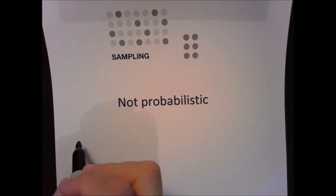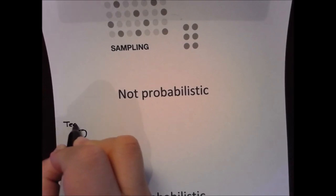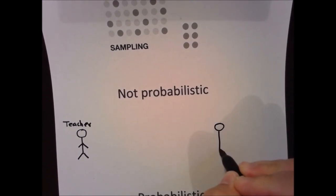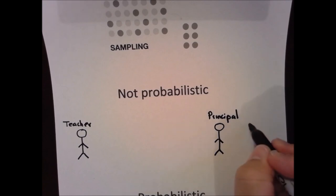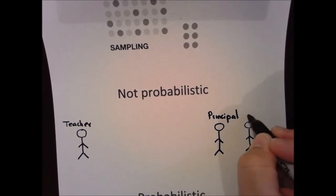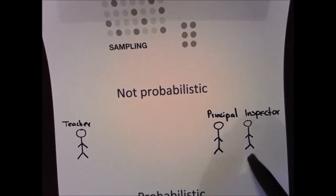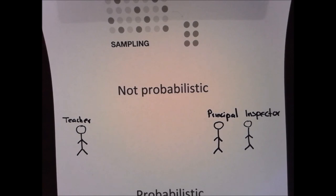Let's suppose that we have a teacher and then we have the principal of the school, and here we have a school inspector. The inspector asked the principal that he wants to know how the students are doing in the school — whether they are students with good grades or students with problems, et cetera.